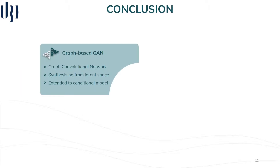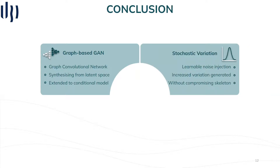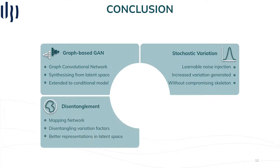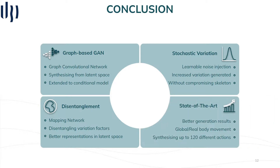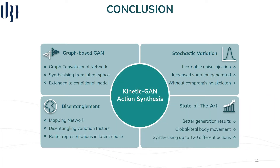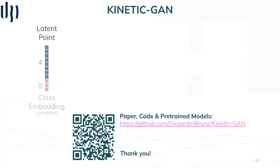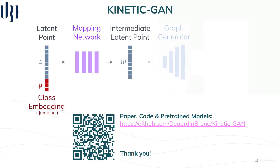To sum up, we propose a graph-based generative adversarial network synthesizing real body movements directly from the latent space. We increase diversity through a learnable noise injection module without compromising the skeleton structure. We employ a mapping network to better disentangle factors of variation and achieve a better representation of the latent space. Finally, we advance the state-of-the-art not only in terms of distribution quality metrics, but also under unconstraining environments, generating up to 120 different actions. Further details and access to our code and pre-trained models are available here. Thank you very much for your attention.